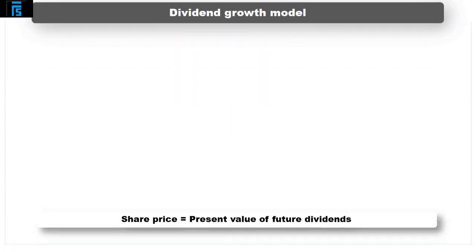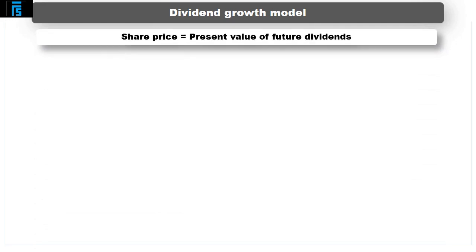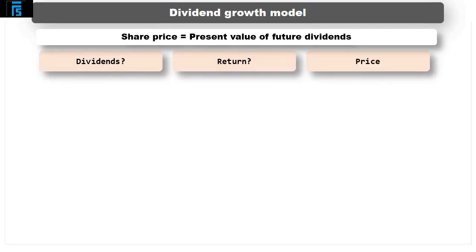The dividend growth model values a share as the present value of its future expected dividend stream. In other words, it assumes that when an investor is determining how much to pay for a share, they: 1. estimate the dividend stream, 2. determine their required return, and 3. discount the dividends at the required rate of return to arrive at the share price to be paid. Whether this actually is the thought process that investors go through can be challenged.